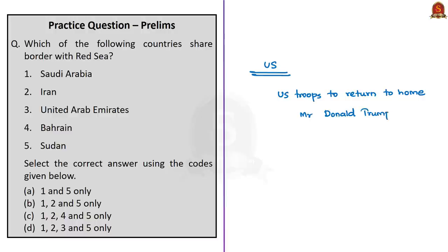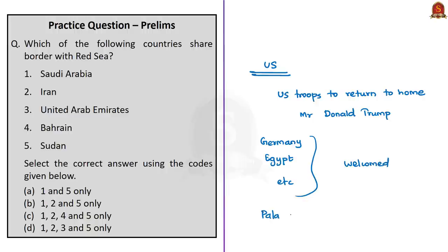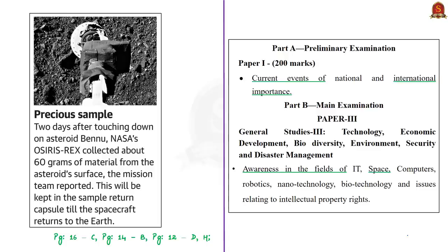Many US allies like Germany, Egypt, UAE, and Bahrain have welcomed this deal because it is expected to boost stability in West Asia. However, Palestinian leaders have strongly condemned the deal. Iran, which supports Palestine, has also opposed the deal, stating that Sudan signed it for its own gains — namely, to be removed from the US terrorism blacklist.